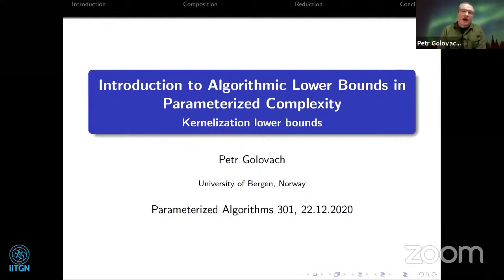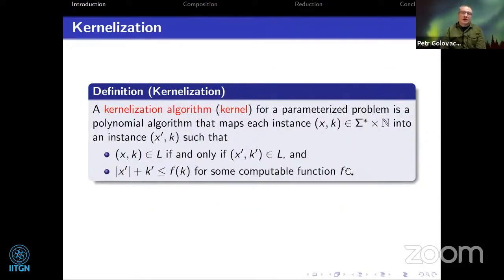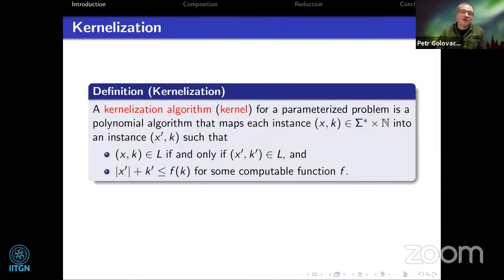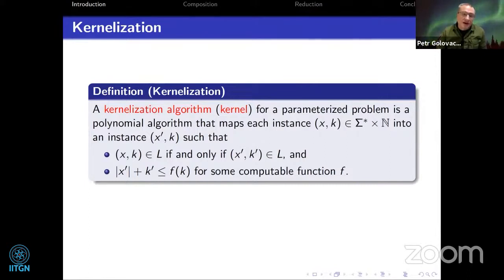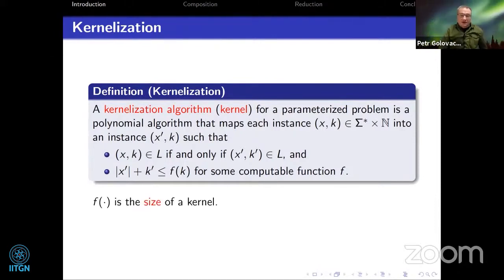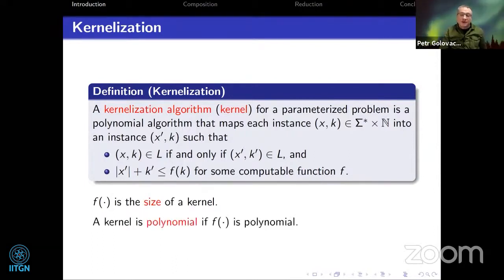Let us recall the definition: what is a kernelization algorithm? A kernelization algorithm for a parameterized problem is a polynomial algorithm that maps each instance of our parameterized problem to an instance of the same problem such that instances are equivalent, and for the new instance we can upper bound the size of the instance plus parameter by some computable function f of the old value of the parameter. The kernel is polynomial if f is a polynomial function.